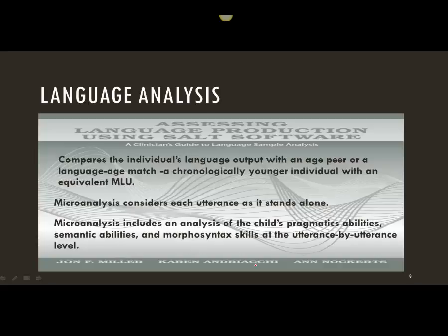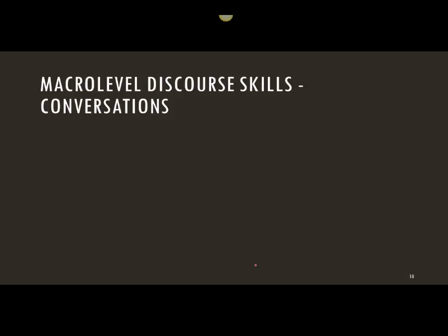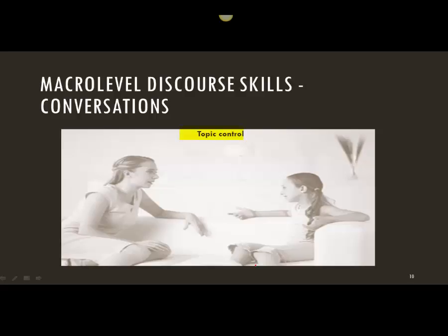We can also conduct a macroanalysis, which is the structure — the narrative structure of a narrative, for example — and that's also part of pragmatics. Other pragmatic measures or discourse measures can be calculated, and that would also be a criterion-referenced measure. In conversations, we can look at different things — for example, who controls the topic in a conversation, how well the child maintains the topic, or perhaps the child is not maintaining the topic and going back to the same topic over and over again.